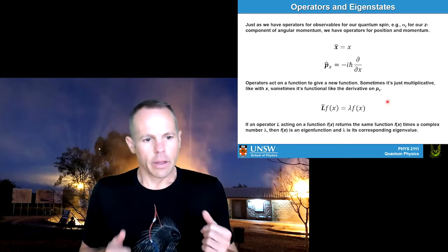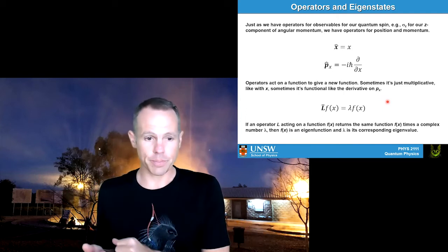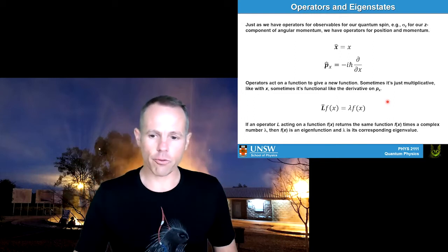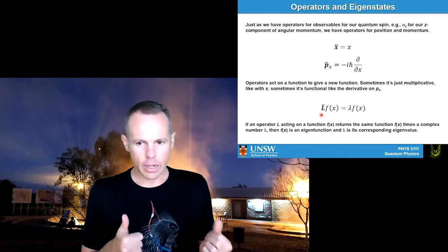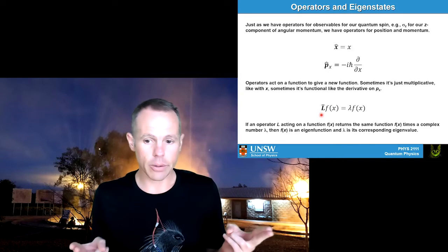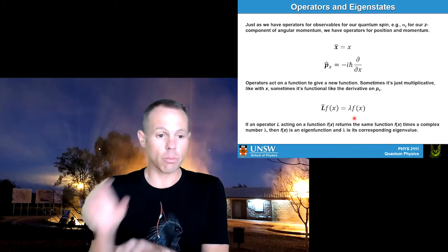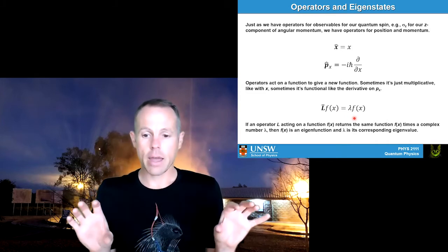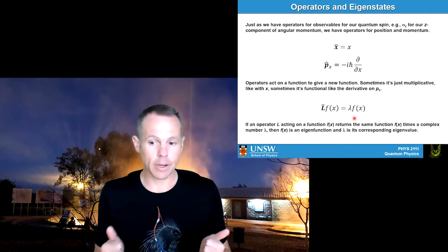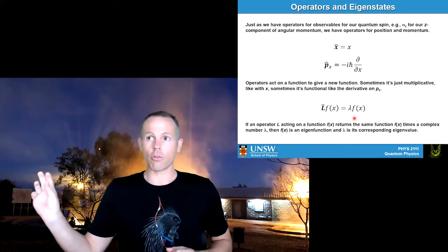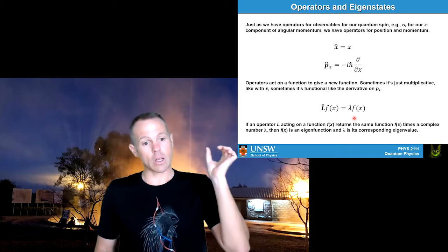In much the same way that operators act on a vector to give you a new vector, operators act on a function to give you a new function. What we're often interested in for some arbitrary operator L acting on some arbitrary function f(x) is what we call the eigenfunction and eigenvalue. So if L operates on f(x) and what we get back is that same function multiplied by a complex number lambda, then that function f(x) is an eigenfunction of the operator with a corresponding eigenvalue lambda.